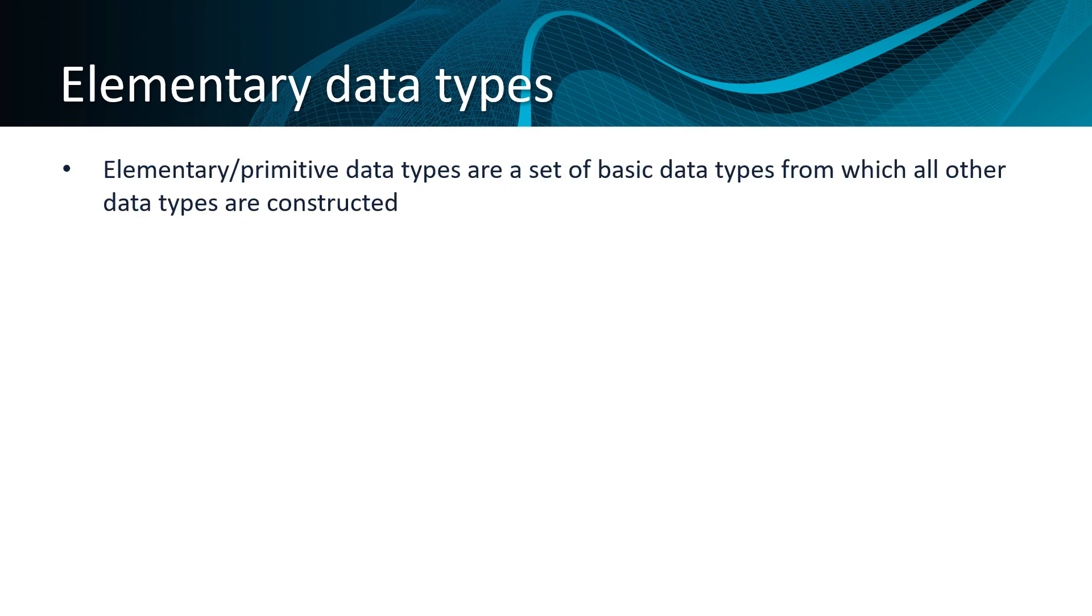Elementary data types, also known as primitive data types, are a set of basic data types from which all other data types are constructed.